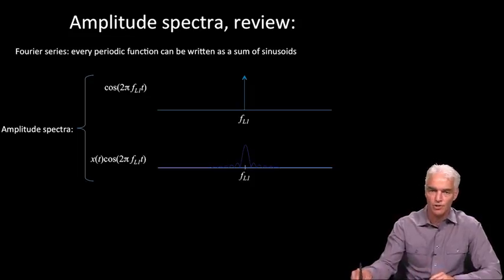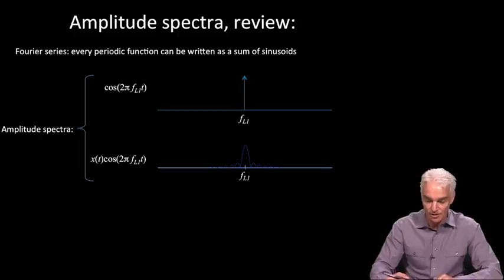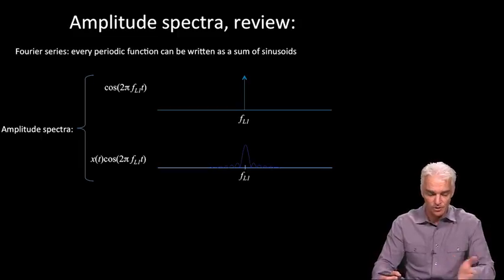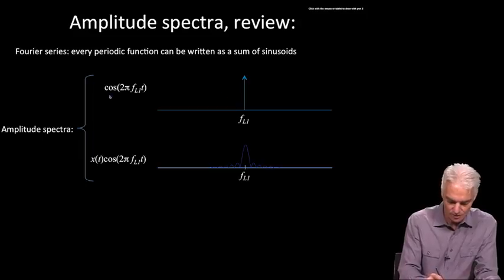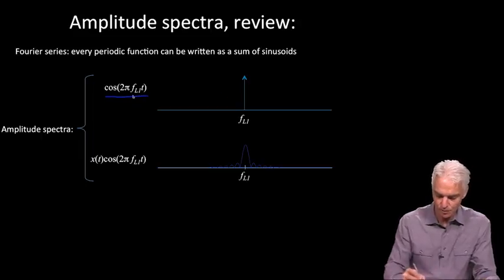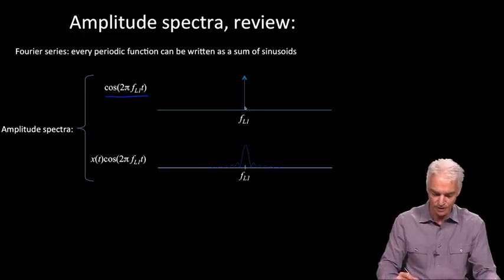Remember that Fourier showed that every periodic function can be written as the sum of sinusoids, no matter what periodic function you have. I'm just showing two particular ones here. If you have a sinusoid itself, then of course it can be written as a sinusoid. The carrier wave that we've been talking about in this class, cosine with frequency L1, if you show that as amplitude spectrum, we just show that as an arrow at L1 frequency.